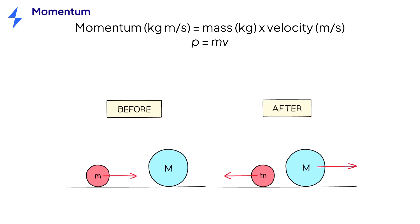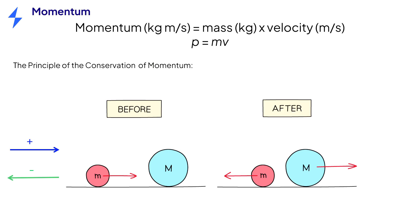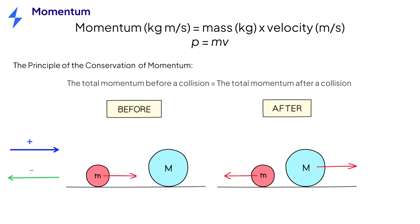These two objects move towards each other and collide. Momentum is conserved. We are taking the right direction as positive and the left direction as negative. The principle of the conservation of momentum states that the total momentum before a collision is equal to the total momentum after a collision.